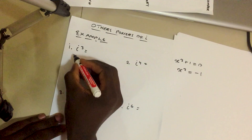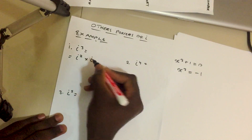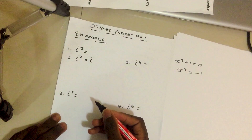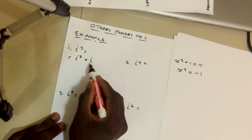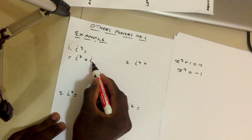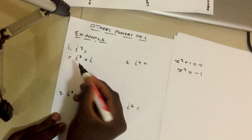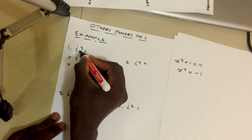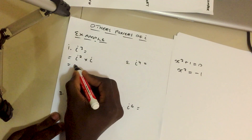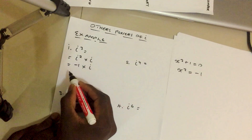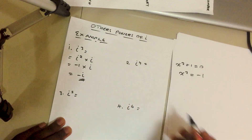Starting with i to the power three: we write it as i squared times i. The reason we do this is to simplify using what we already know — since the bases are the same we add the powers: two plus one equals three. We know i squared is negative one, so we have negative one times i, which gives us negative i. So i to the power three equals negative i. For i to the power four, we write i squared times i squared.